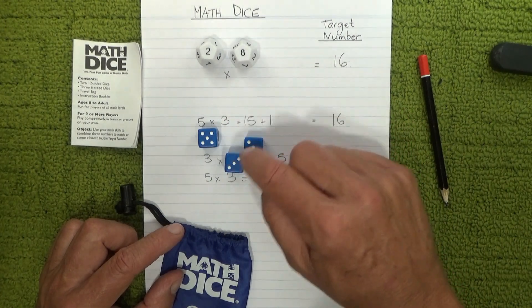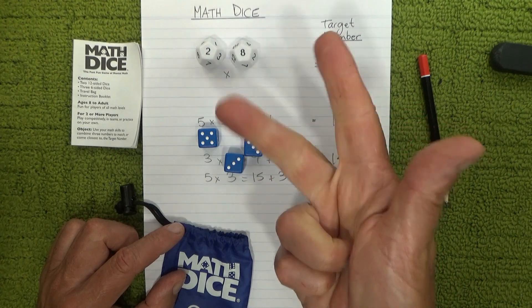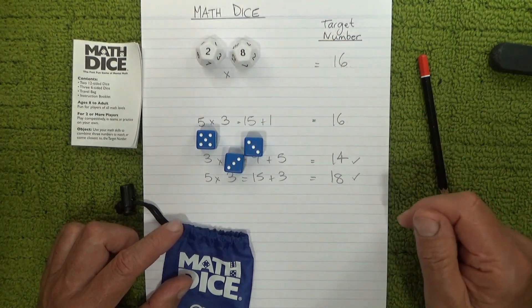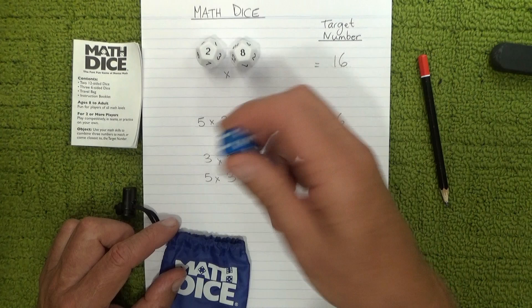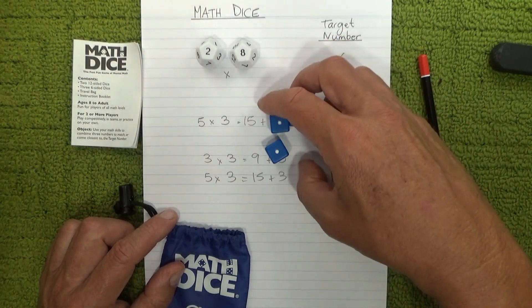You could of course do three to the power of three, which would be nine, twenty seven minus five is 22, but that's not going to get you there either. One more go, see how we go. Oh there we go.